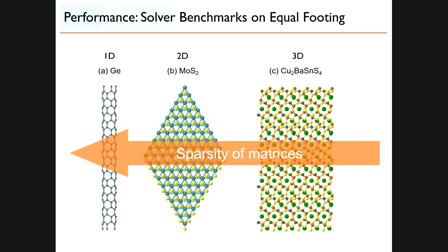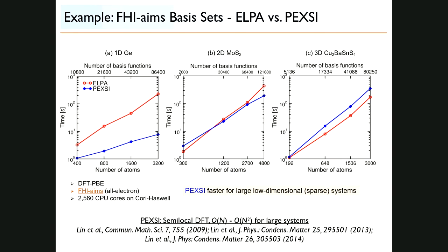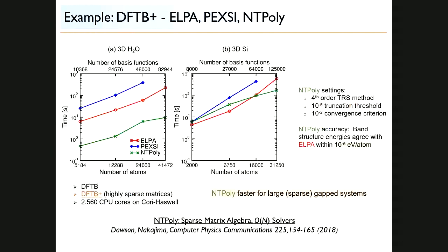I'll go quickly through the benchmarks because you can look at them in the uploaded presentation. One thing ELSI enables is comparing different solvers on pretty much equal footing. For instance, looking at different 1D, 2D, and 3D problems in electronic structure theory — in this case with FHI-aims basis sets — for 1D systems, PEXSI (pole expansion and selective inversion, a density matrix solver) significantly beats ELPA, whereas for 3D systems it's somewhat the opposite. You can do the same thing with DFTB+ matrices: here an order-N solver, the NTPoly library — really a sparse matrix algebra library — is significantly faster than any of the others.